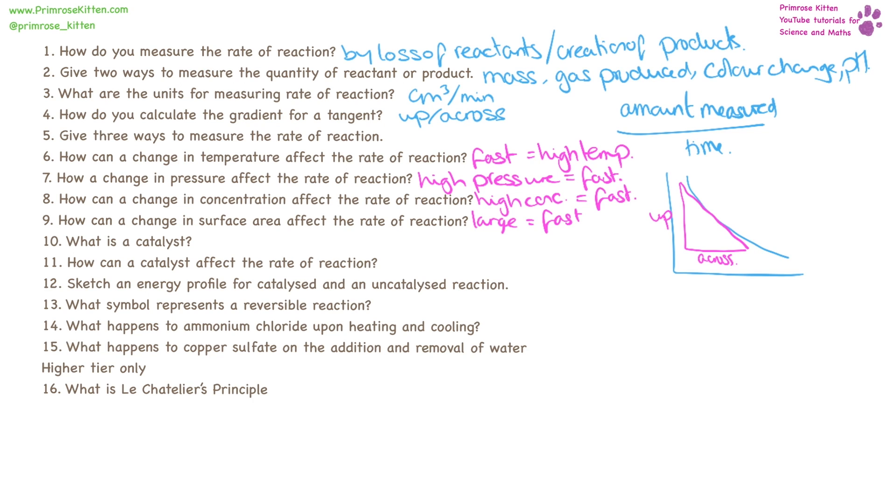A catalyst is something that speeds up the rate of reaction but doesn't get used up. How can a catalyst affect the rate of reaction? It can speed it up.